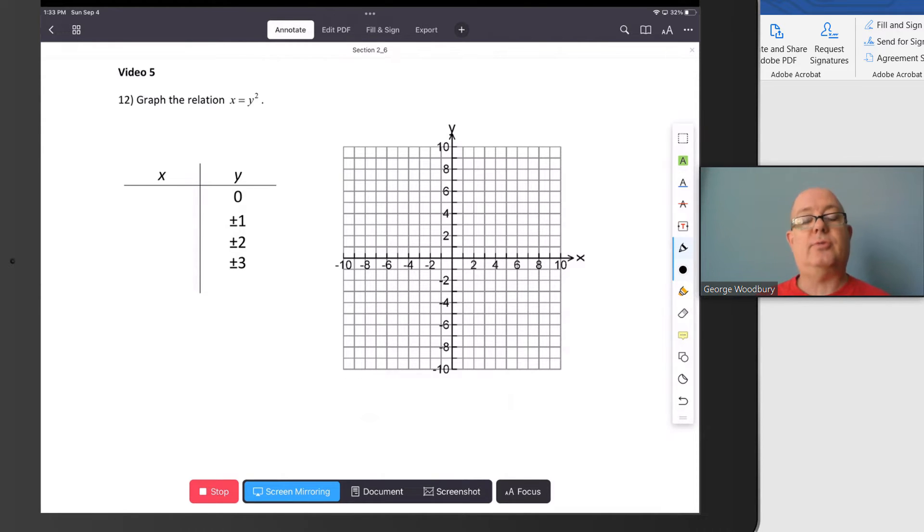I've set up a table of values, and here I've got values for y. We're going to substitute for y and find the value of x that goes with them. So again, x equals y squared. For 0, 0 squared is 0. So we've got the point 0, 0 on this graph.